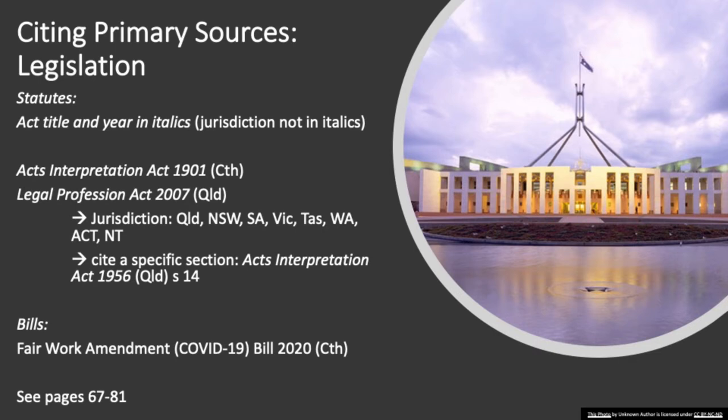If the legislation is passed by a state or territory parliament, we abbreviate it according to the list on the slide. For example, Queensland is 'Qld' and New South Wales is 'NSW'. In most cases you will also need to provide the actual section number, telling the reader exactly where within that piece of legislation the relevant law is located. To refer to section 14 of the Queensland Acts Interpretation Act 1956, we use a lowercase 's', then a space, then the section number, following the Act title, year and jurisdiction.